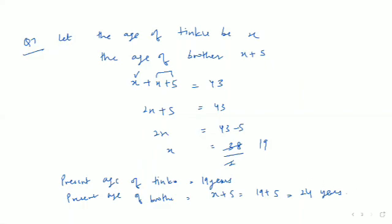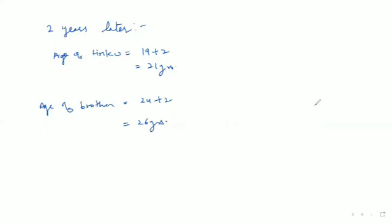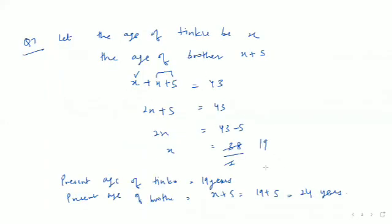We also have to find the ages of both Tinko and his brother two years later. Two years later, the age of Tinko would be 19 plus 2, which is 21 years. And the age of brother would be 24 plus 2, which is 26 years. These are the answers: Tinko's present age is 19 years, brother's present age is 24 years, Tinko's age 2 years later is 21 years, and brother's age 2 years later is 26 years.